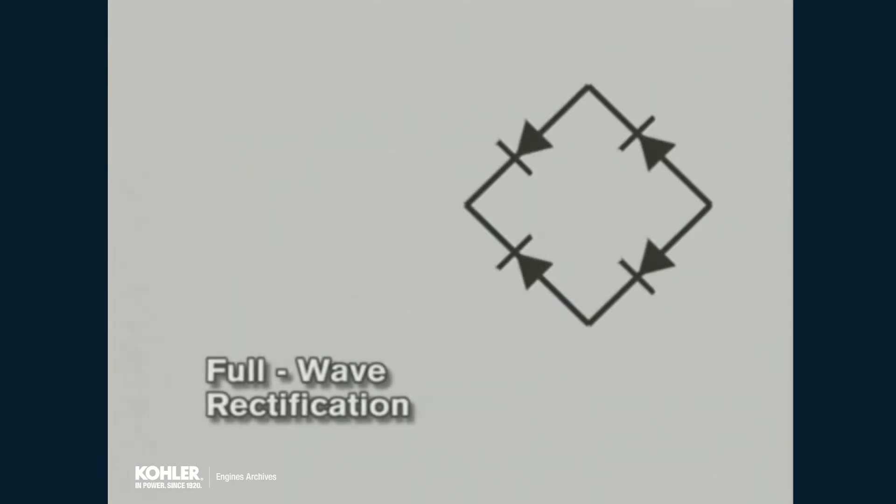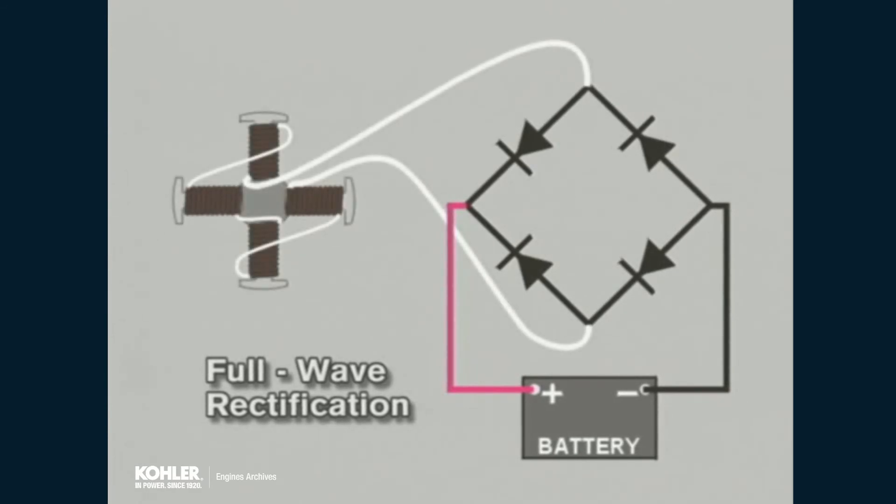To make use of the full output potential, a full-wave rectifier is used. Four diodes are arranged to form an electrical bridge between ground on one side and the battery positive post on the other. In the center of this bridge are the stator output leads.